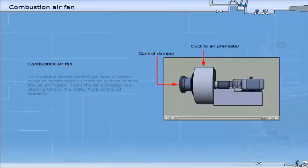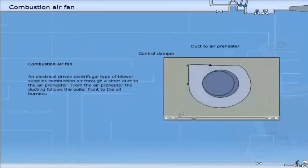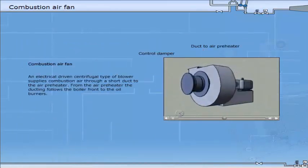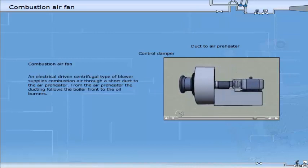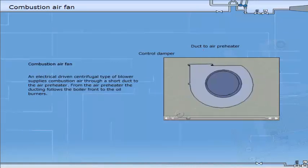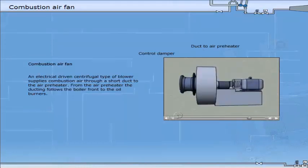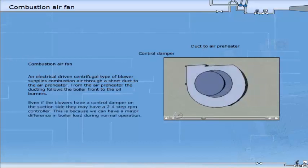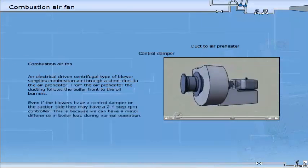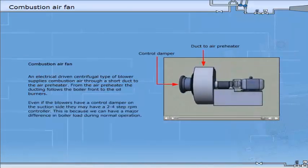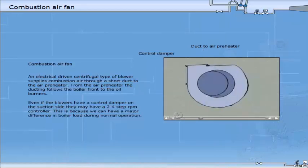An electrical driven centrifugal type of blower supplies combustion air through a short duct to the air preheater. From the air preheater, the ducting follows the boiler front to the oil burners. Even if the blowers have a controlled damper on the suction side, they may have a 2 to 4 step revolutions per minute controller.